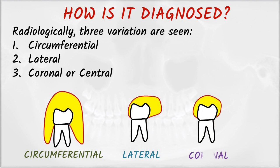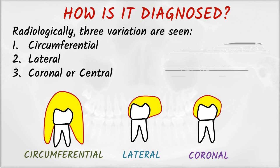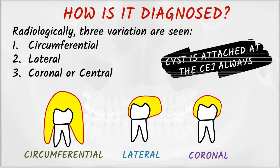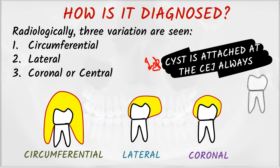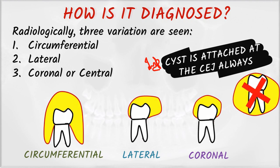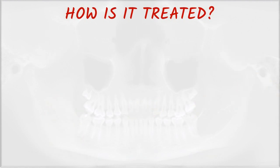One important thing to notice: in all cases of dentigerous cyst, the cyst is attached at the CEJ. Look at the figure — if it is not attached at the CEJ, it is not a dentigerous cyst but another type of cyst.